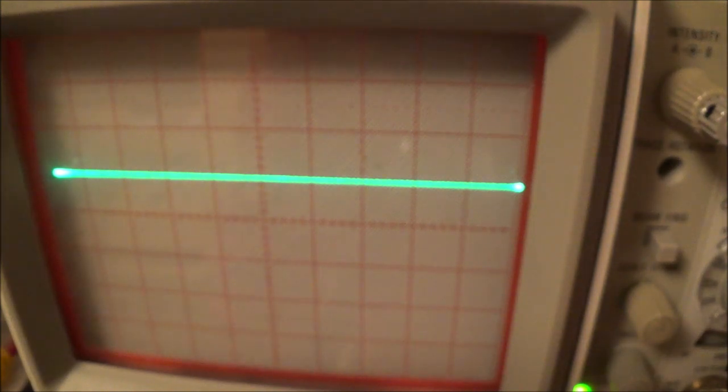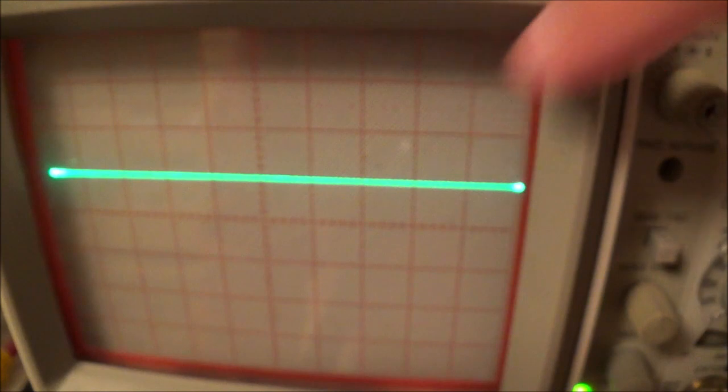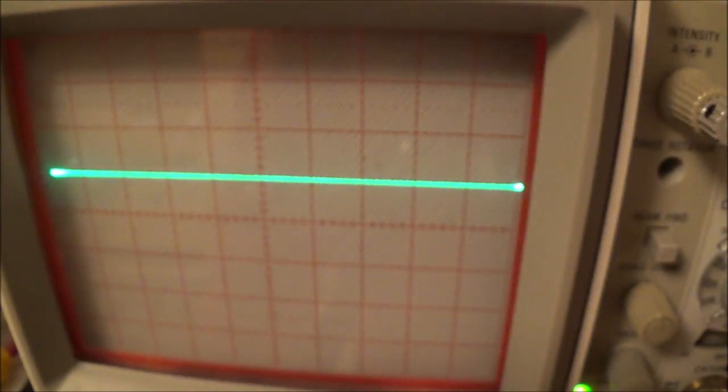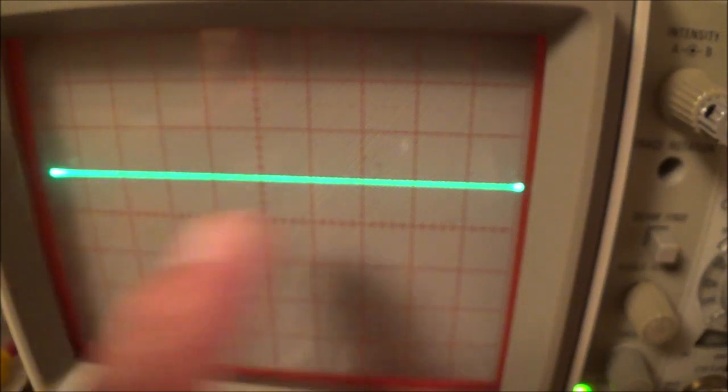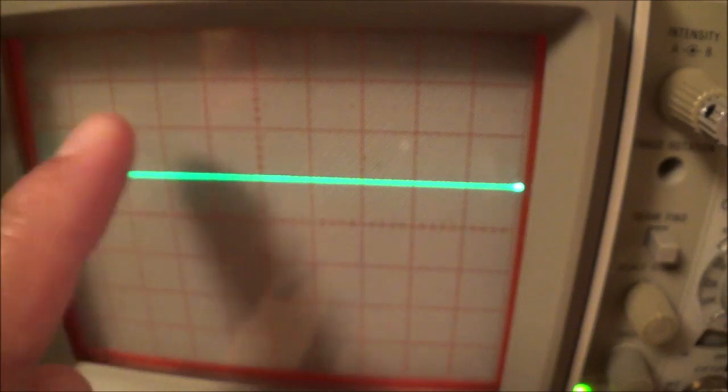Now I just adjust that horizontal length control. You can see here you can adjust it like that and you get it so you fill out the whole screen. Basically what it is, it's covering 10 divisions.